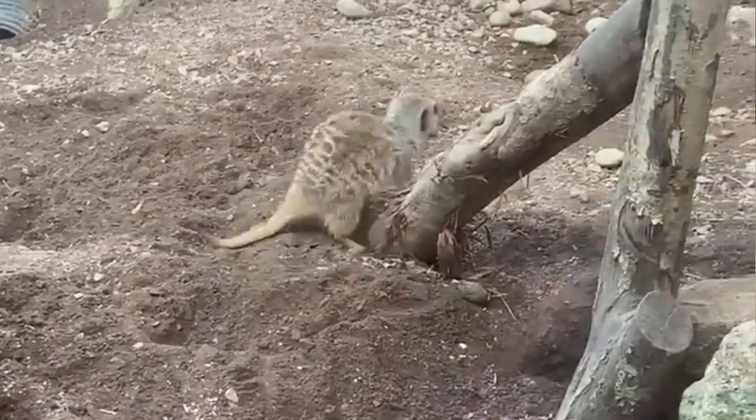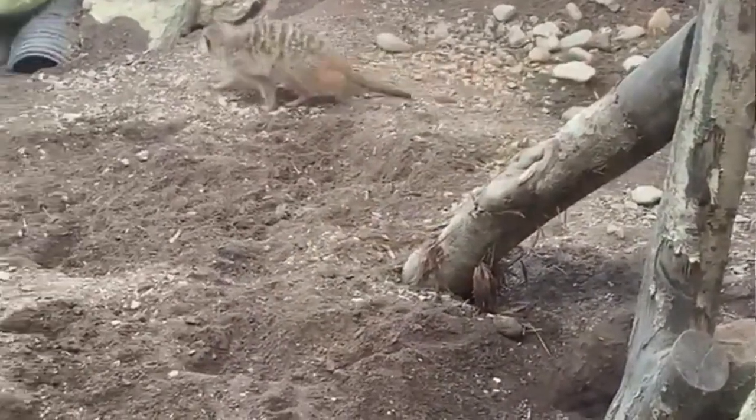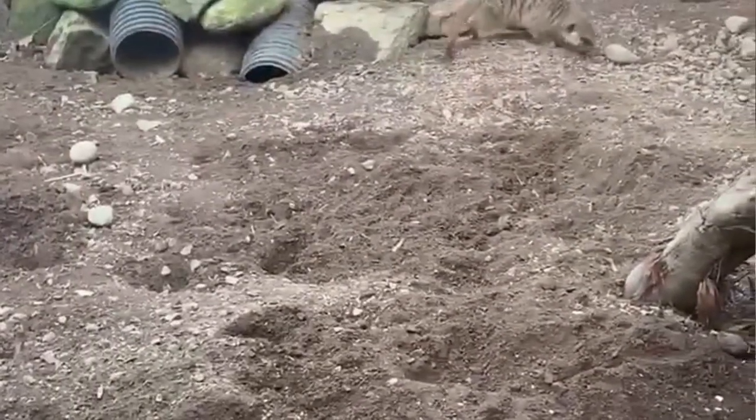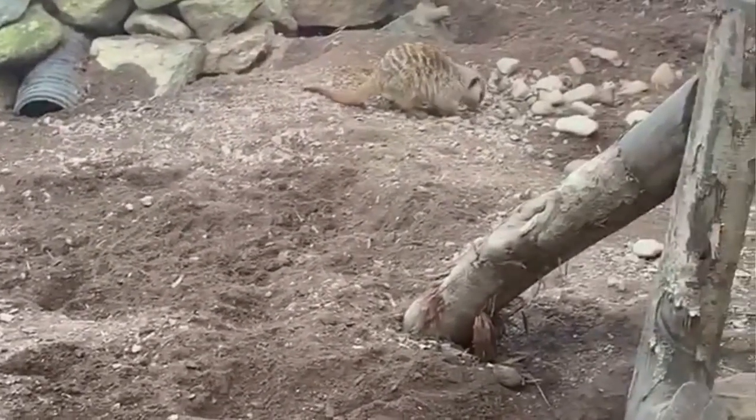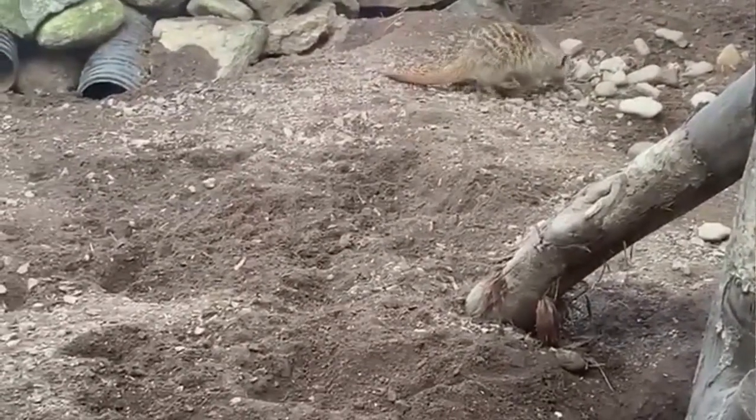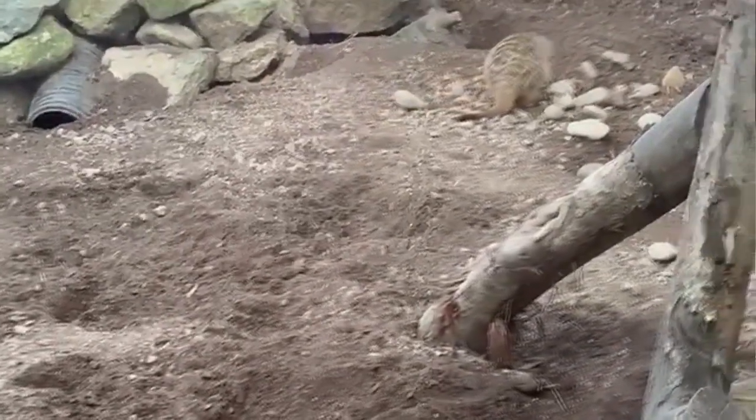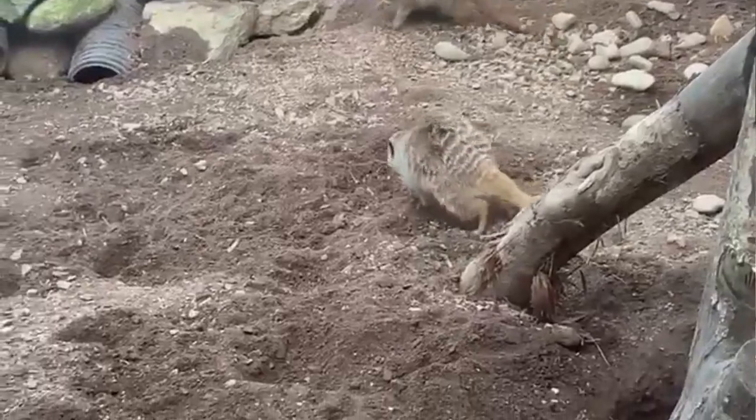Meerkats are carnivorous desert dwellers who belong to the mongoose family. They can live in groups between two and thirty members. There tends to be a dominant male and female as head of the colony. They are a cooperative breeding species in which they demonstrate altruistic behaviours within the colony.